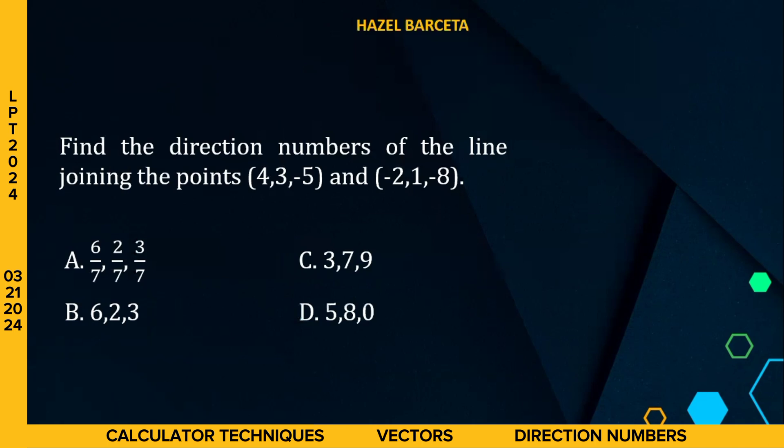Find the direction numbers of the line joining the points (4,3,-5) and (-2,1,-8). So, first, alamin po muna natin kung ano po ba ang ibig sabihin ng direction numbers.